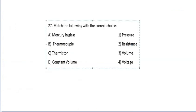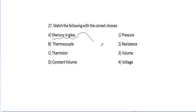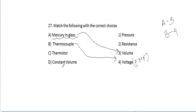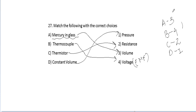Next match the column — thermometers and their thermometric properties. Mercury in glass uses volume, so A is 3. Thermocouple uses EMF/voltage, so B is 4. Thermistor uses resistance, so C is 2. Constant volume thermometer uses pressure, so D is 1. Correct answer: A3, B4, C2, D1.